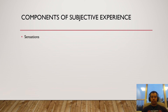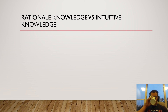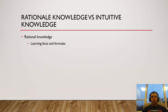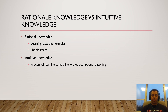What makes up these subjective experiences? First, sensations — raw feelings we don't necessarily think about. These sensations in turn can be turned into perceptions — how we think about those sensations. And then emotions are how we in turn think about and feel about our perceptions. There's also rational knowledge versus intuitive knowledge. Rational knowledge is book smarts — learning facts and formulas. Intuitive knowledge, on the other hand, is our experiences — the process of learning something without conscious reasoning. There are three types: psychoanalytical, mystical, and Socratic.